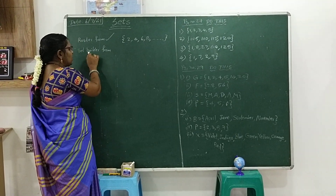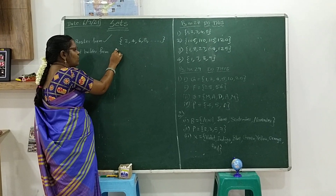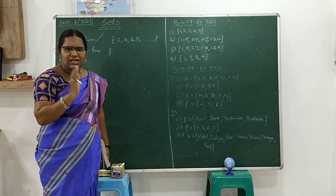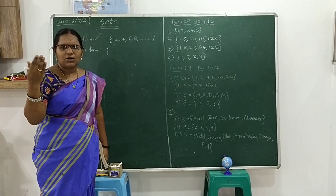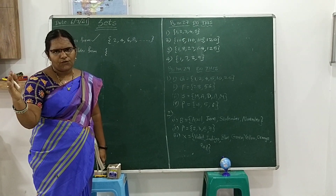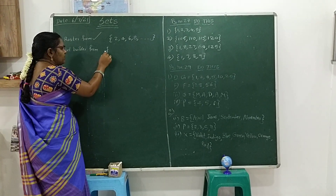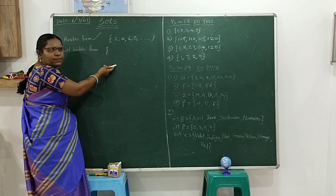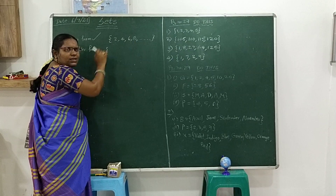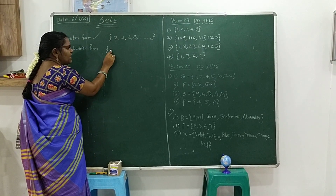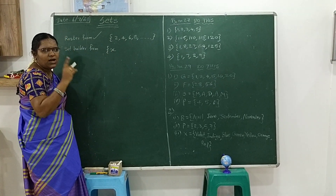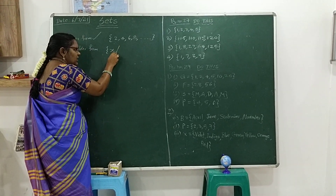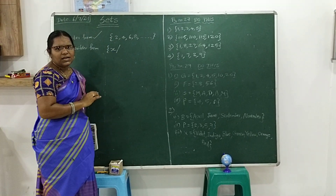The next form is set builder form. Set builder form means we denote all the elements with one variable and we give the common property which the elements are following. For example, we are going to express a set in set builder form. We denote all the elements with a single variable, for example x, and all elements are denoted by x such that those elements are there.